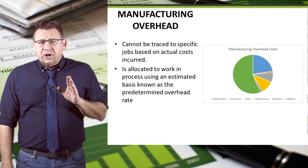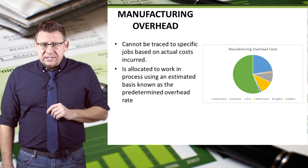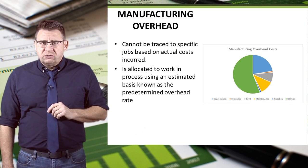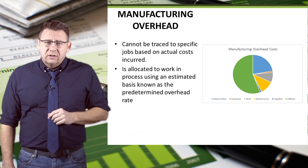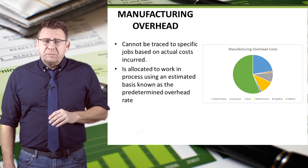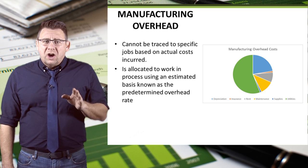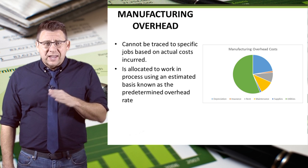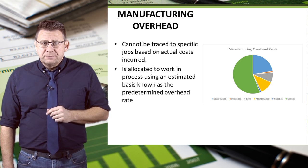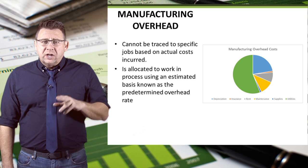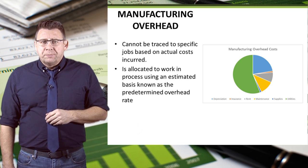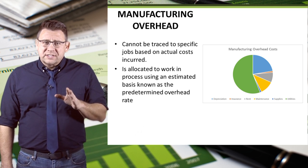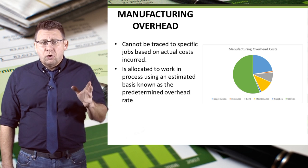Manufacturing overhead cannot be traced to specific jobs based on actual cost incurred. This is because manufacturing overhead costs cannot easily be traced to products. They include indirect materials, indirect labor, and other costs often related to production operations as a whole.